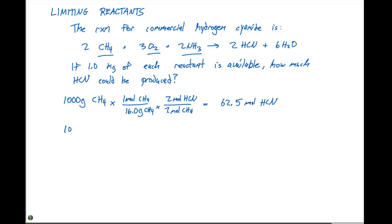Now, we do the same calculation for 1,000 grams of O2. From the periodic table, one mole of O2 is 32.0 grams. From the balanced chemical equation, we need three moles of O2 to produce two moles of HCN. This is going to give us a total of 20.8 moles of HCN.